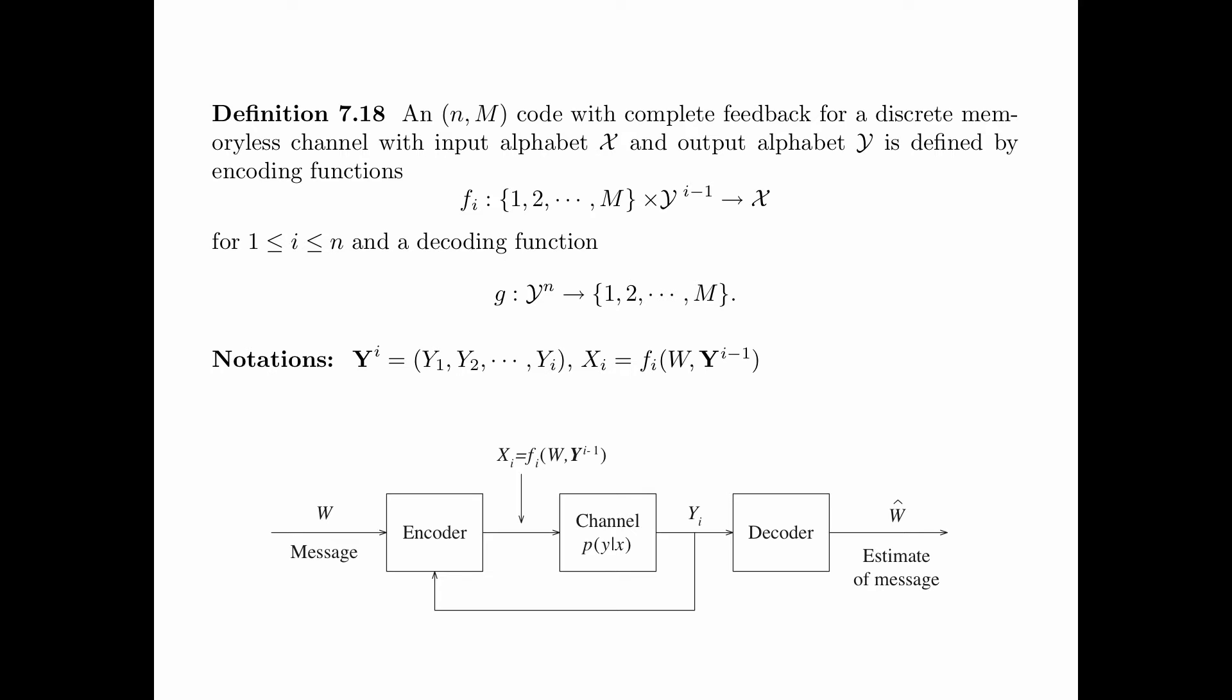Here is the schematic diagram for an (n,M) code with complete feedback. At time i, the symbol X_i is transmitted through the channel, and the symbol Y_i is received and fed back to the encoder.